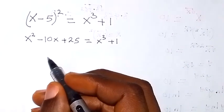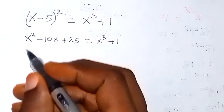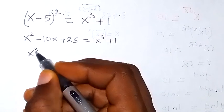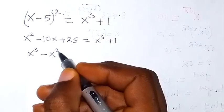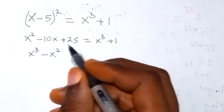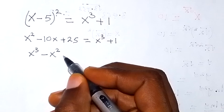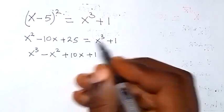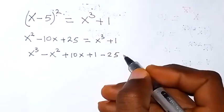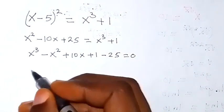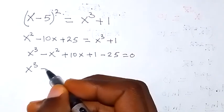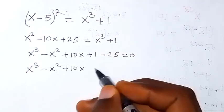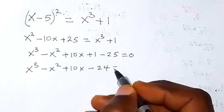Now, from here let's take everything to one side to form a cubic equation. Then we have x raised to the power 3, then minus x squared, then minus 10x comes over and becomes plus 10x, then we have plus 1 here already, then minus 25, which equals 0. So written again: x cubed minus x squared plus 10x, then 1 minus 25 becomes minus 24, which equals 0.